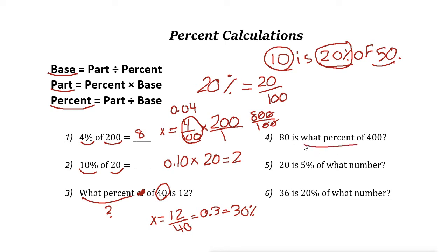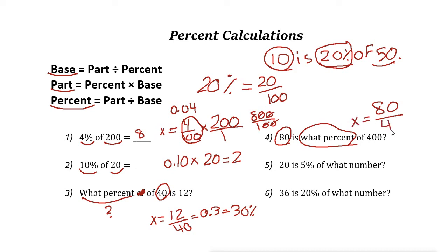Next: 80 is what percent of 400? Again, the percent part is missing, so we divide part by base. The part is 80 and the base is 400. So 80 divided by 400 equals 1 fifth, which equals 20%. So 80 is 20% of 400.